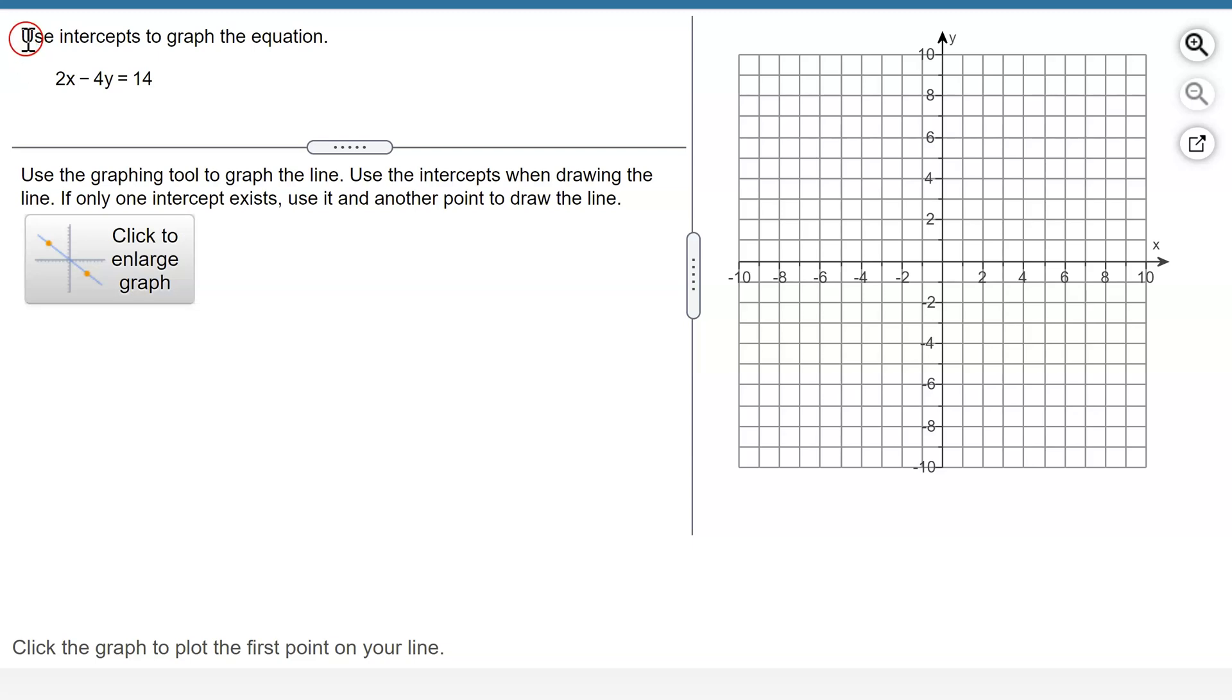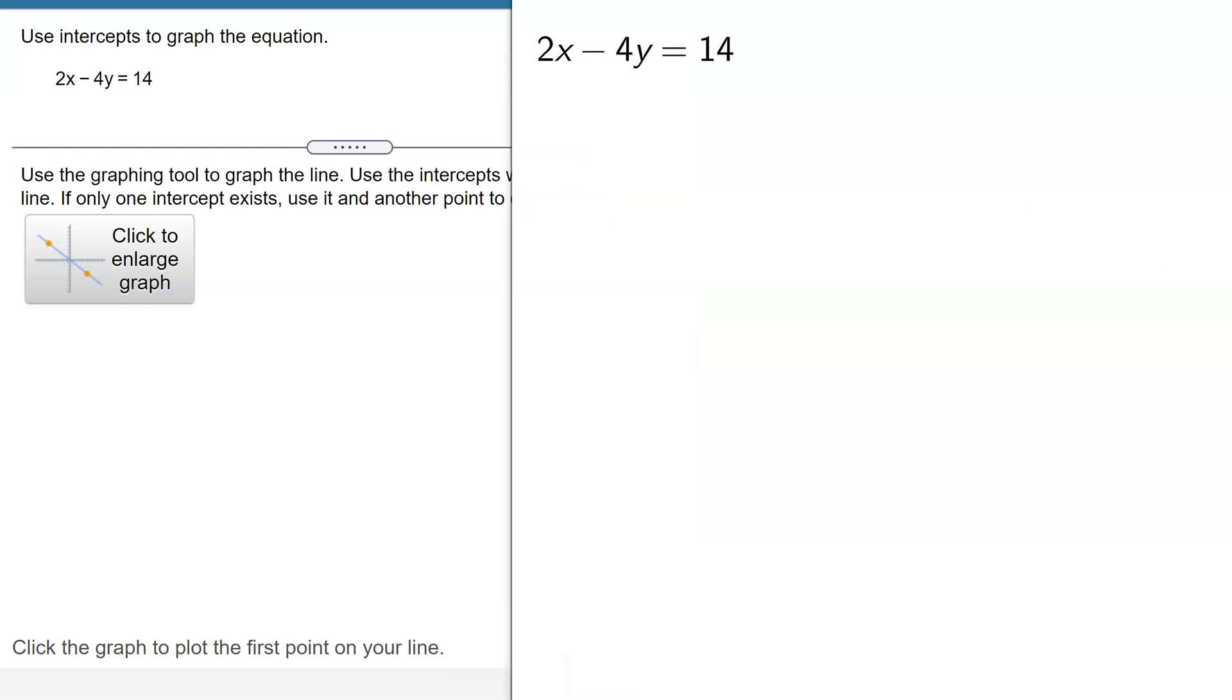Here is an example from MyMathLab in which I need to use the intercepts to graph the equation 2x minus 4y equals 14. I'm going to need to find the intercepts, so let me get my scratch paper out.